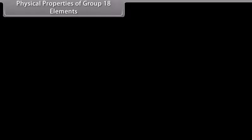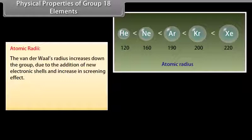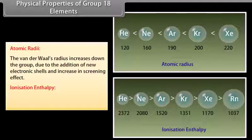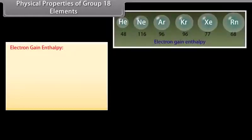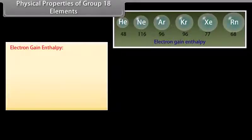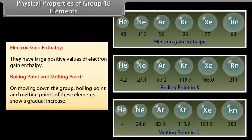Physical properties of Group 18 elements: Atomic radii in noble gases correspond to van der Waals radii, which increase down the group due to the addition of new electronic shells and increases in screening effect. Ionization enthalpies of noble gases are very high due to their stable configurations, and decrease with increase in atomic number from helium to radon. Since noble gases have stable electronic configurations, they have no tendency to accept electrons and therefore have large positive values of electron gain enthalpy. Boiling points and melting points show a gradual increase down the group due to a corresponding increase in van der Waals forces of attraction.